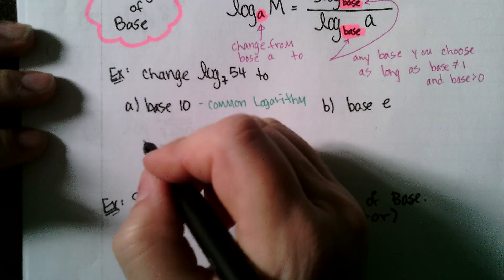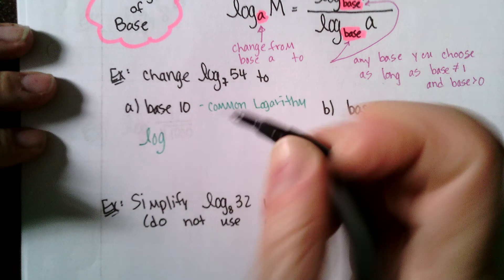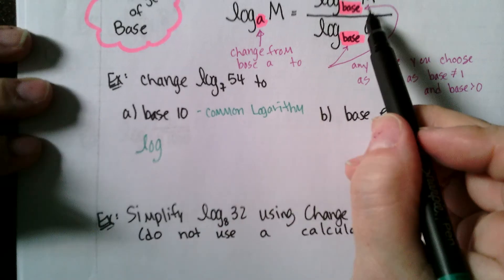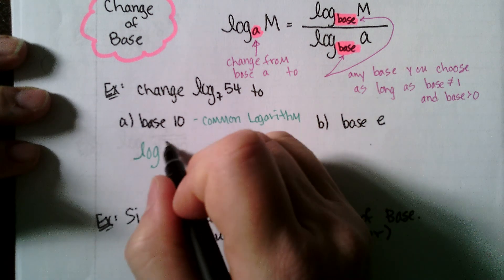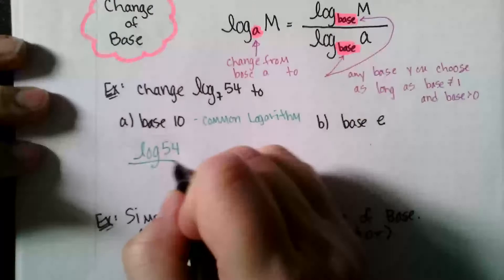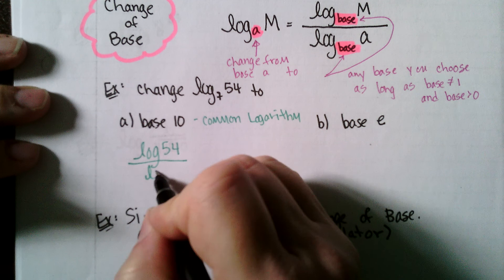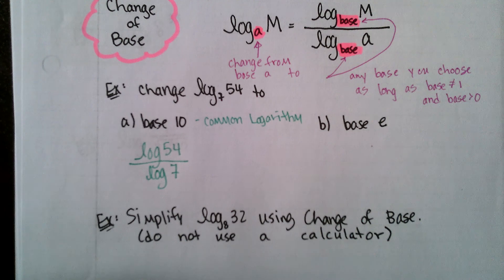So we simply rewrite this as log 54 divided by log 7, since the original argument goes in the numerator and 7 was the previous base. That's all you have to do to rewrite it.